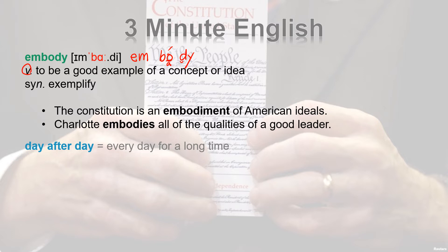The Constitution is an embodiment of American ideals. Note that 'embodiment' is the noun form of 'embody.' Charlotte embodies all of the qualities of a good leader.